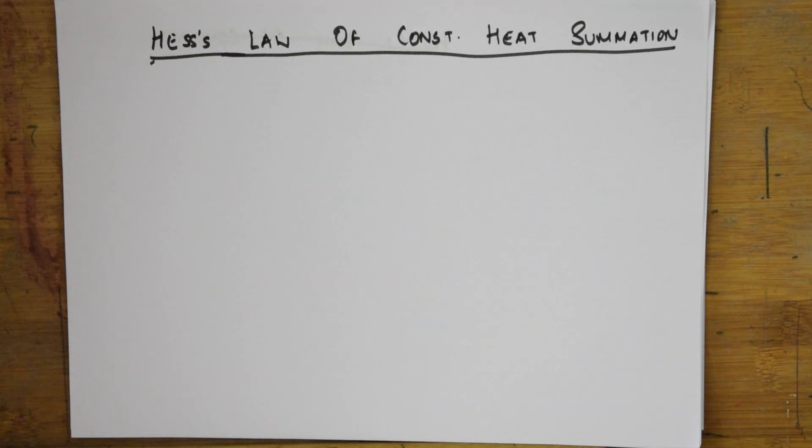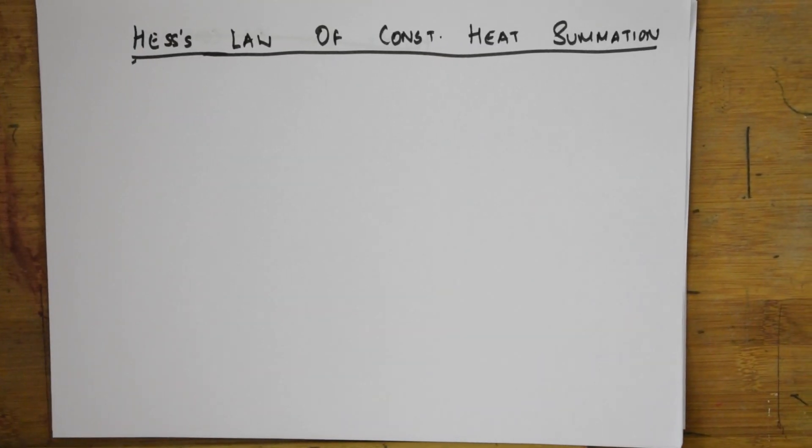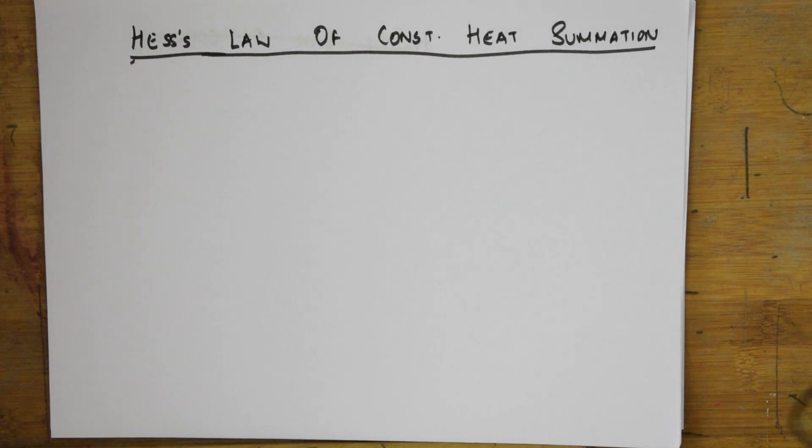Welcome students to one more session on a very important concept in thermodynamics: Hess's Law of Constant Heat Summation. In the previous video, I taught you about the Born-Haber cycle. We've seen how a solid crystal lattice of sodium chloride is formed from its gaseous sodium ions. Now let's see what Hess's Law is.